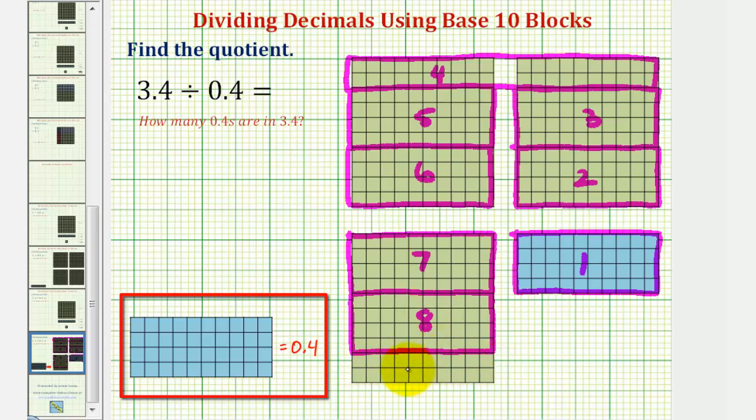Now notice how we have these two longs remaining. We need to be careful here. Remember we're looking for copies of 0.4, which consist of four longs. We only have two longs, so we have two of the four longs needed for another copy of 0.4.